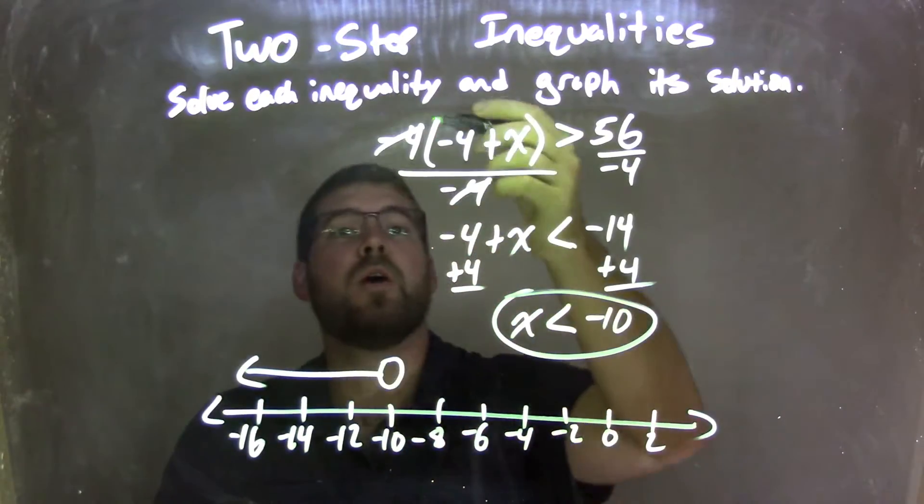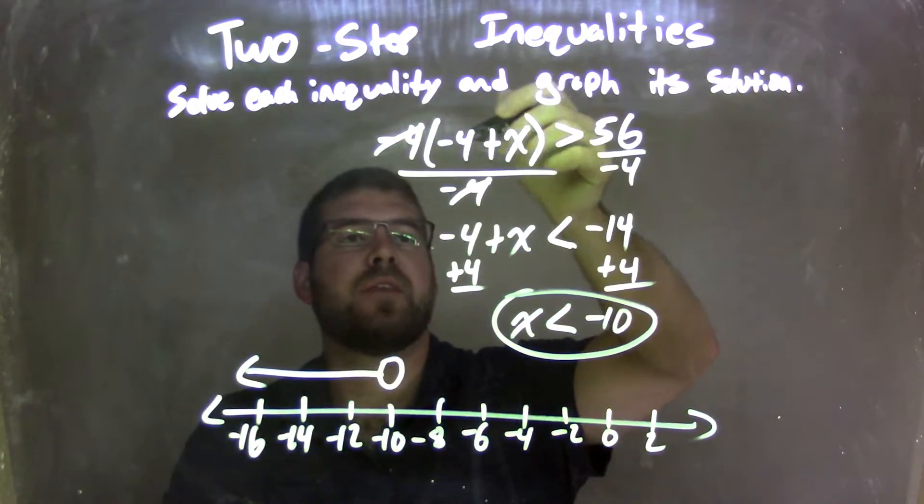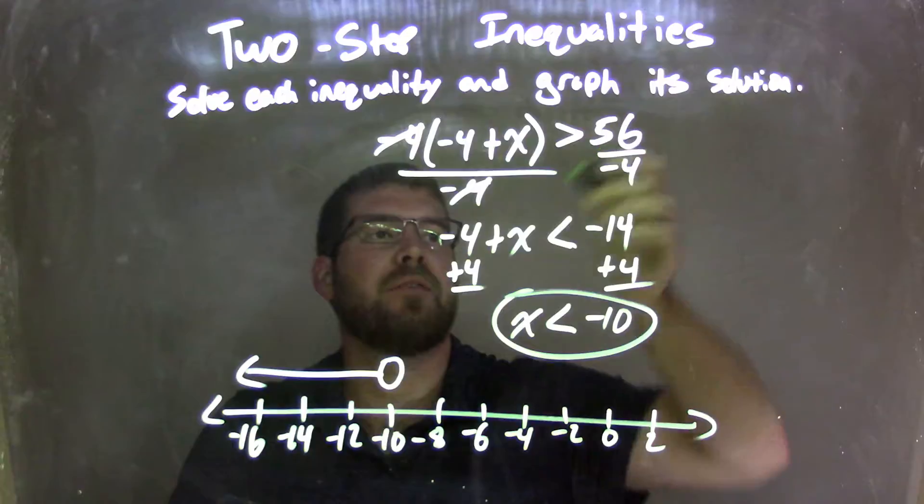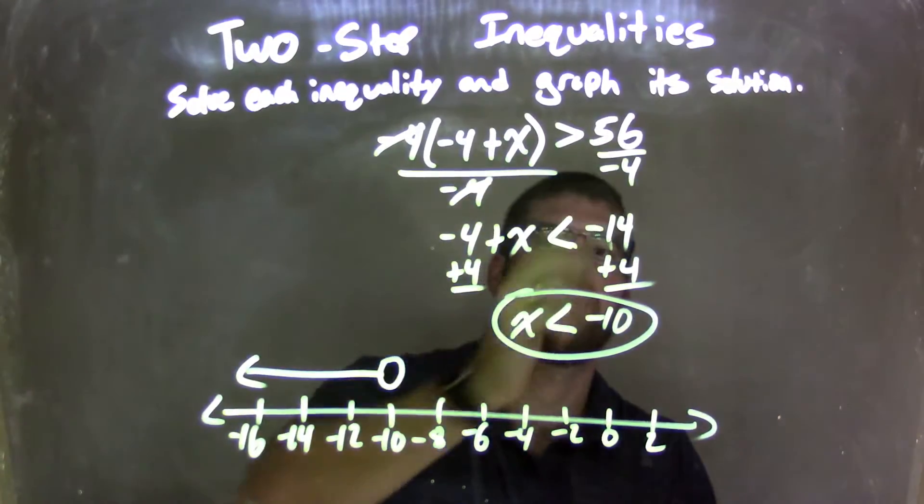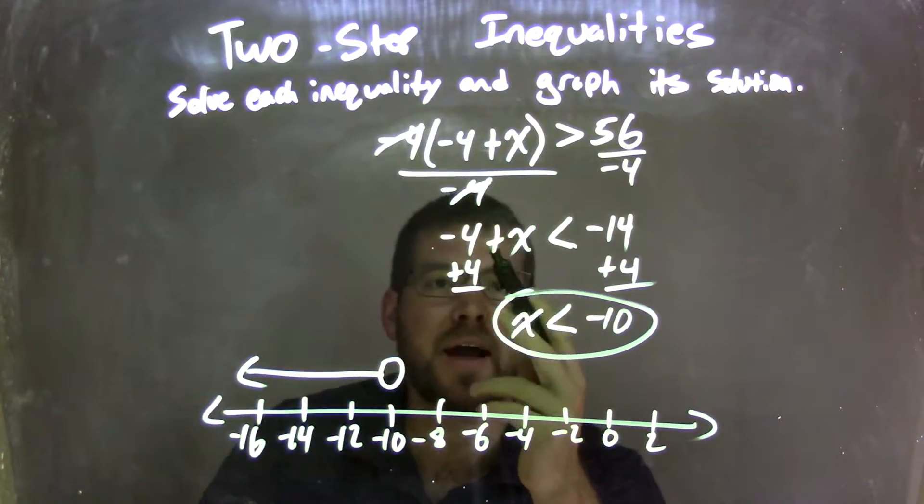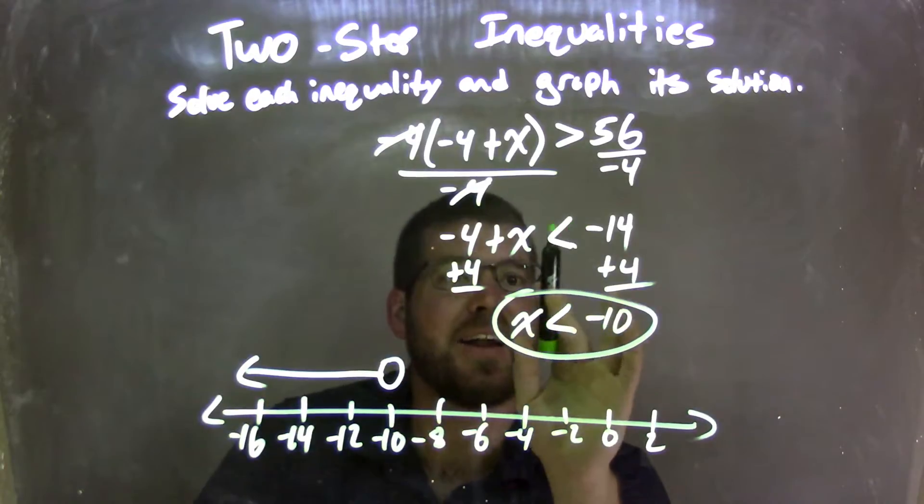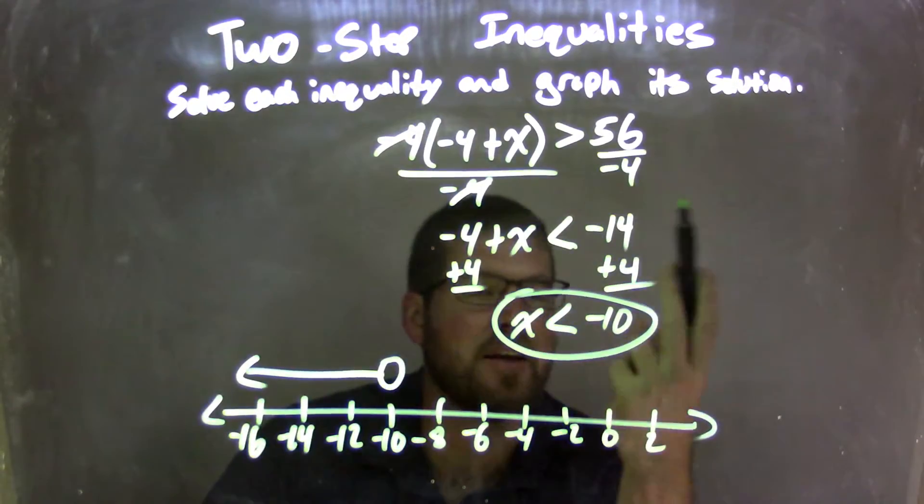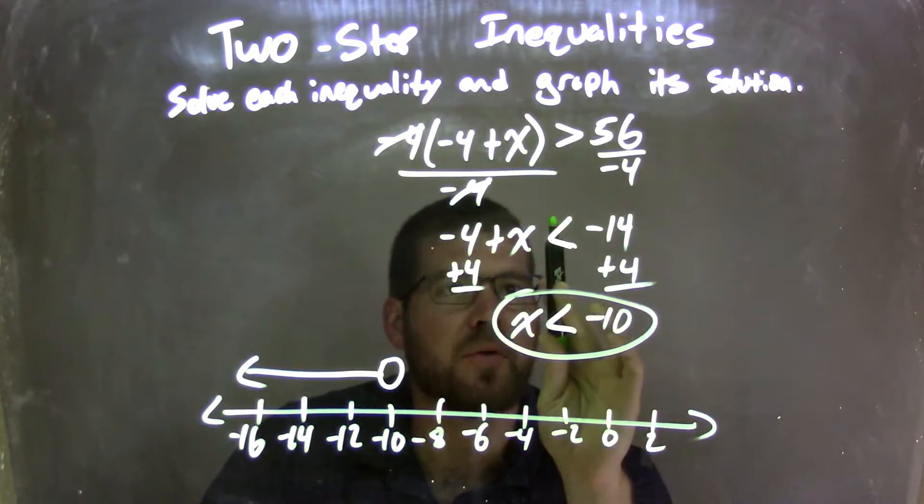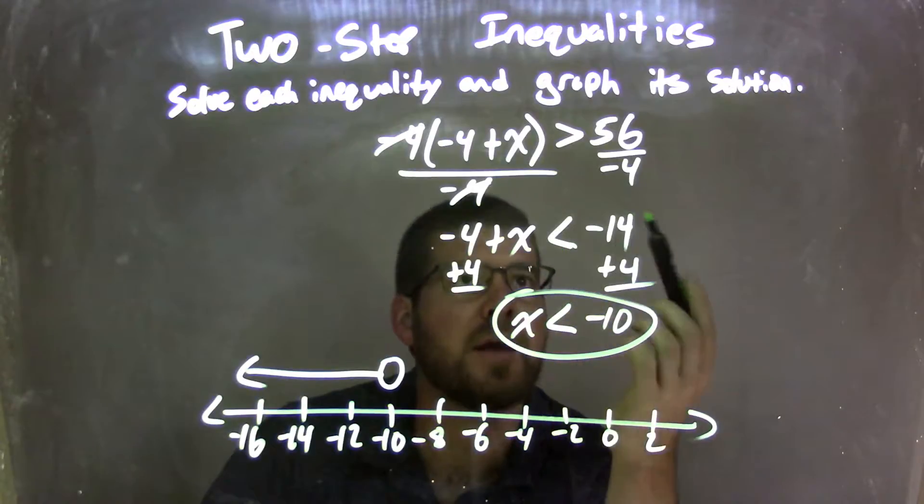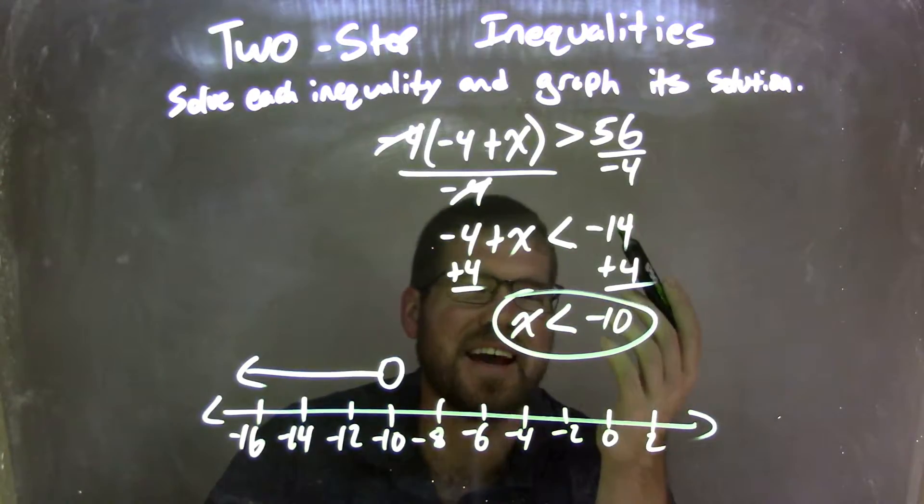So let's recap. We had negative 4 times the parentheses negative 4 plus x end parentheses is greater than 56. I divided both sides by negative 4, leaving me with negative 4 plus x, and I flip my inequality because I divided by a negative, so the greater than sign turned into a less than sign, and 56 divided by negative 4 was negative 14.